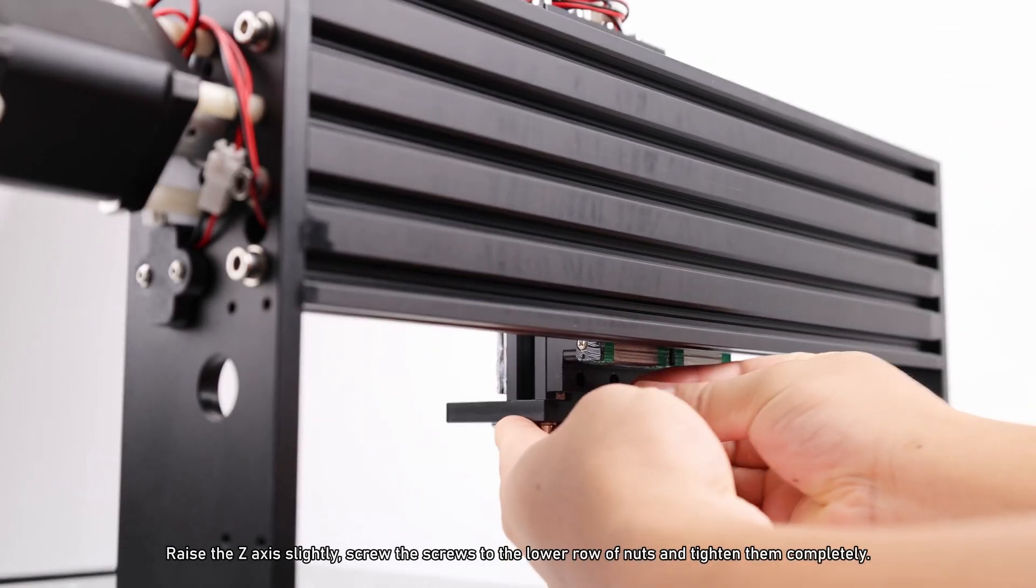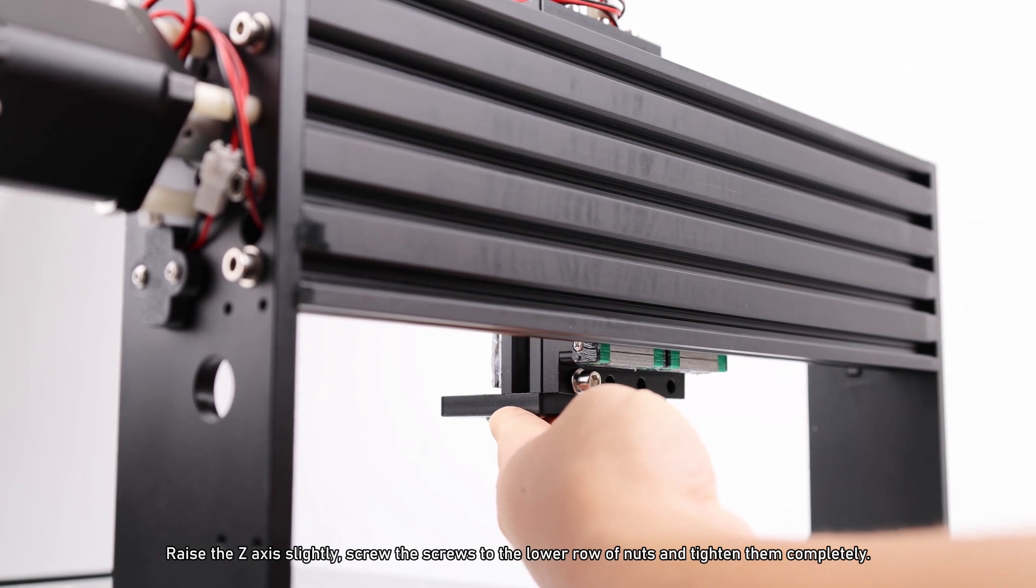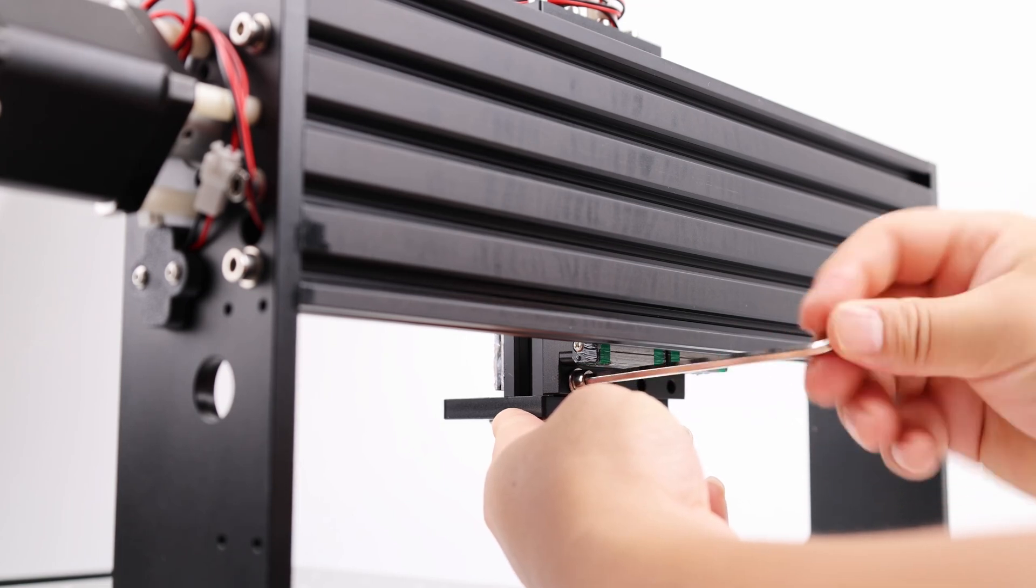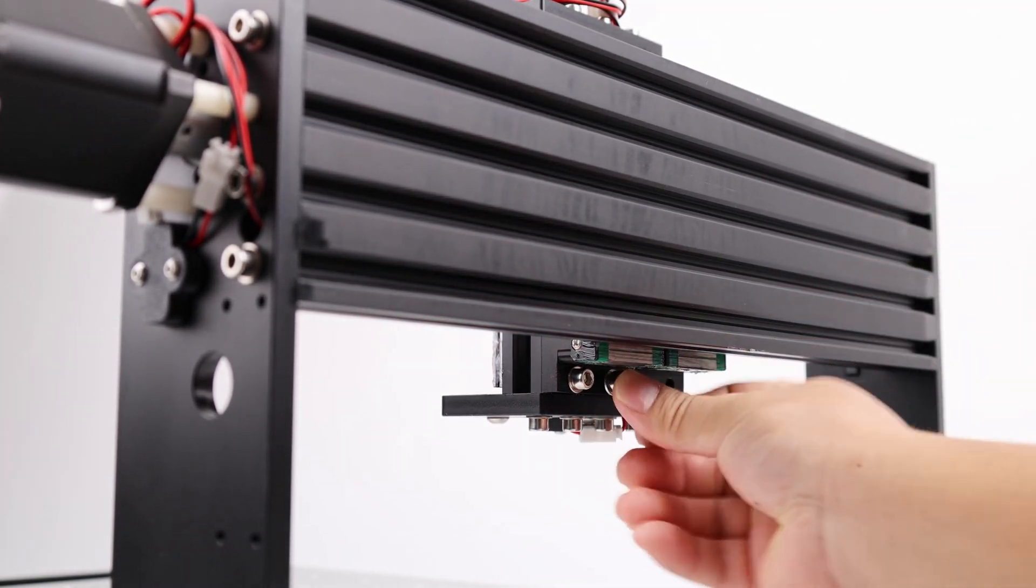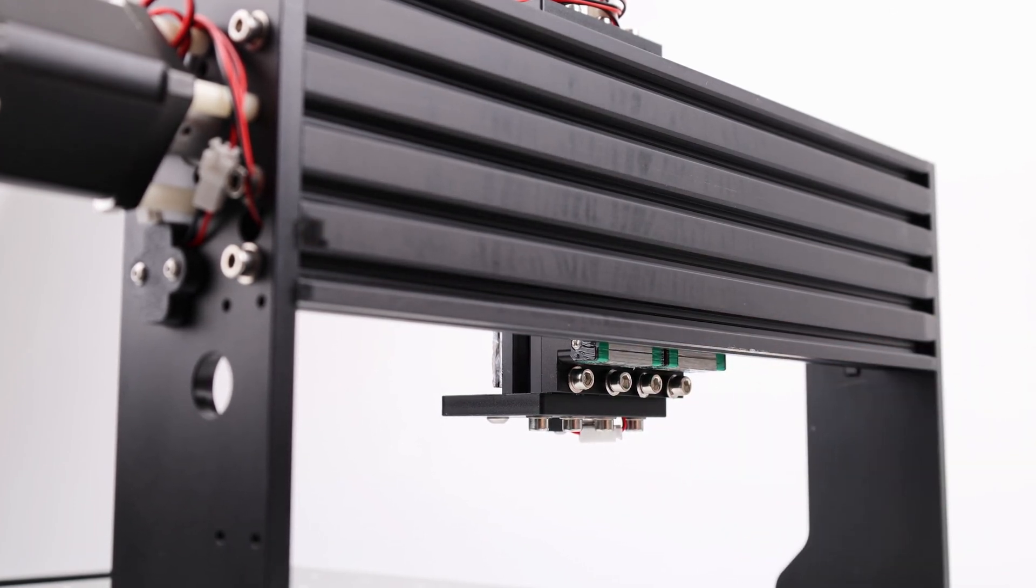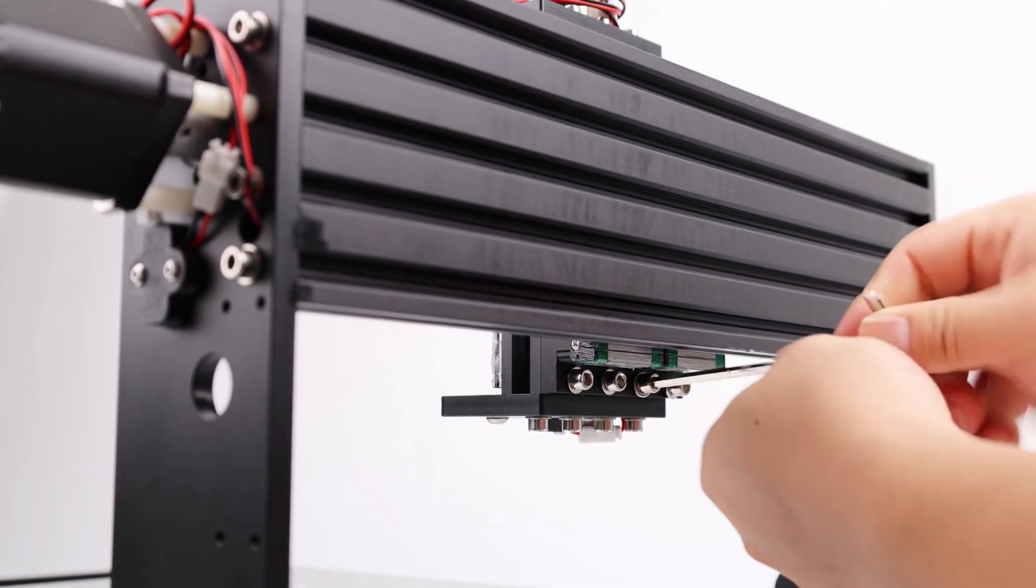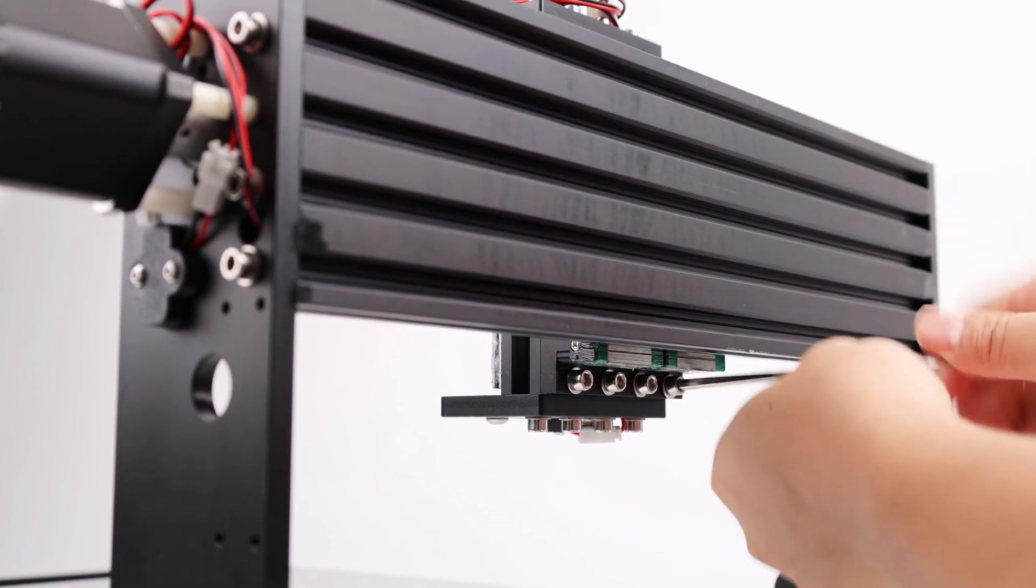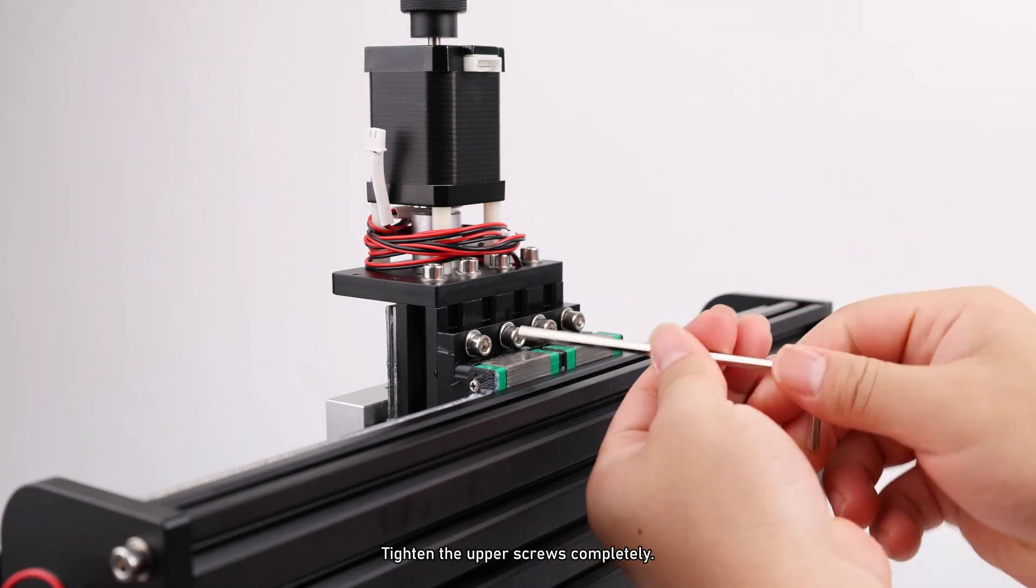Raise the Z axis slightly, screw the screws to the lower row of nuts and tighten them completely. Then tighten the upper screws completely.